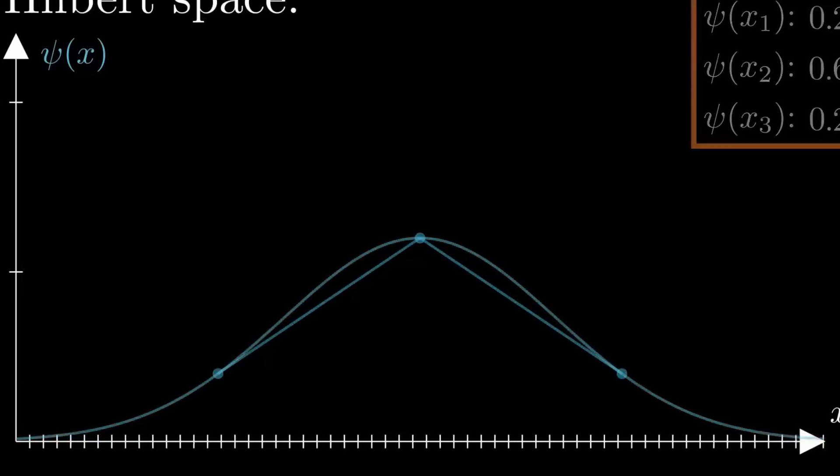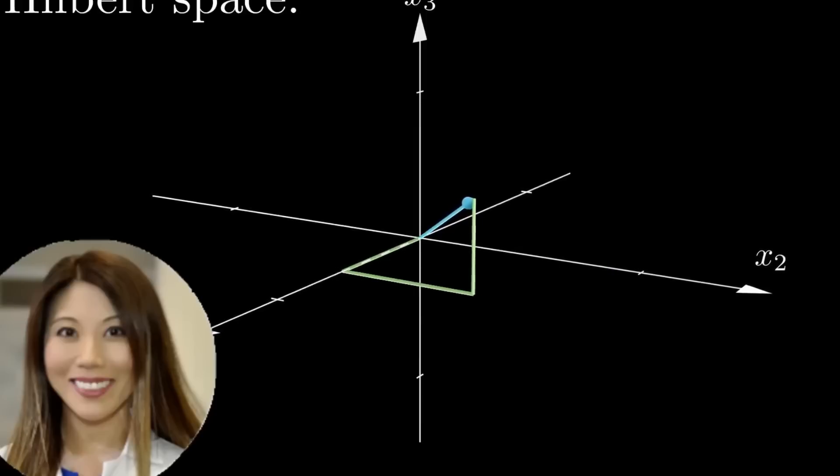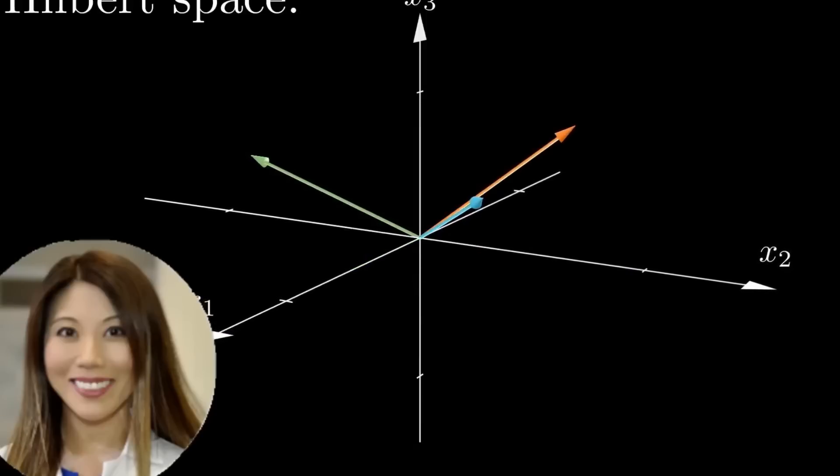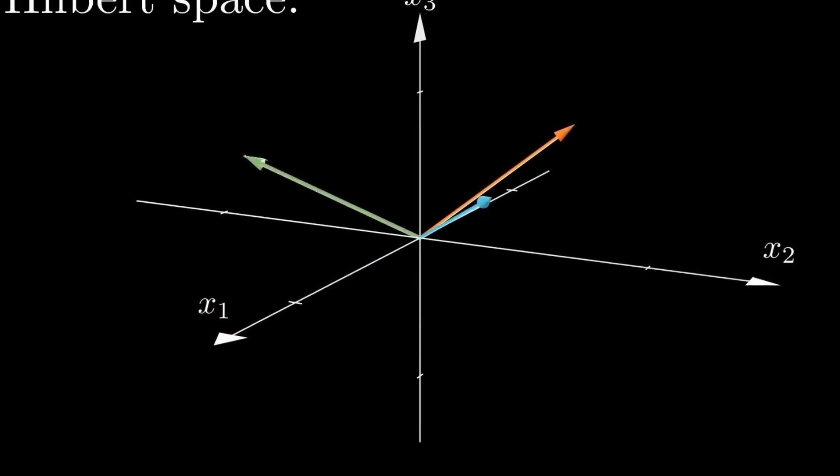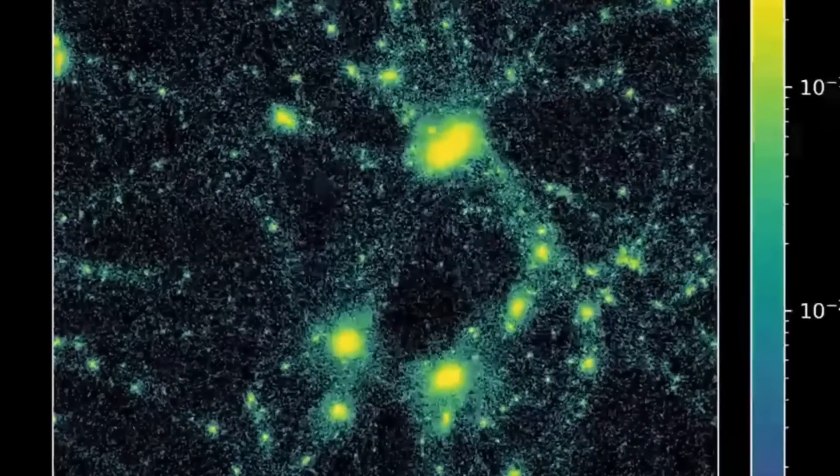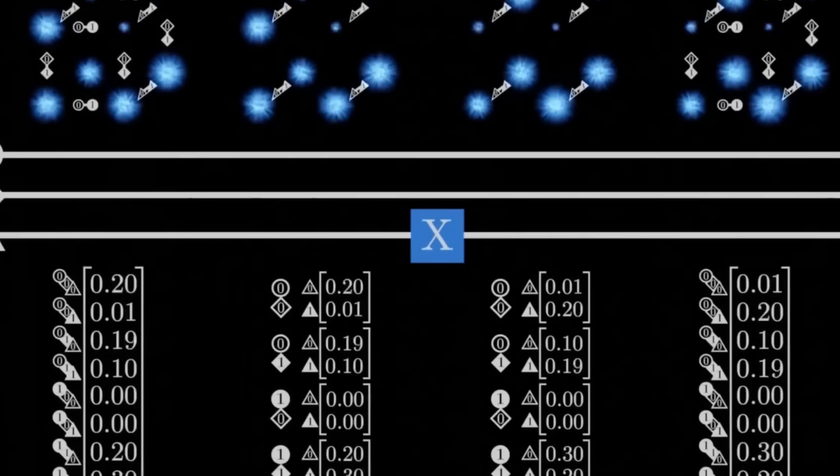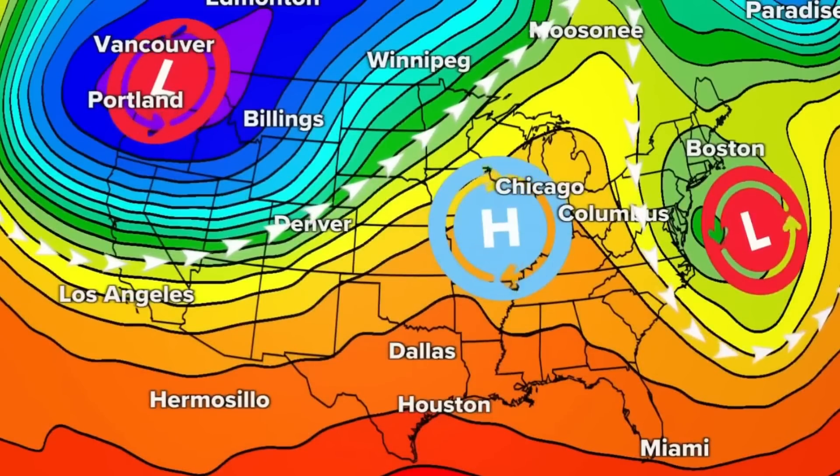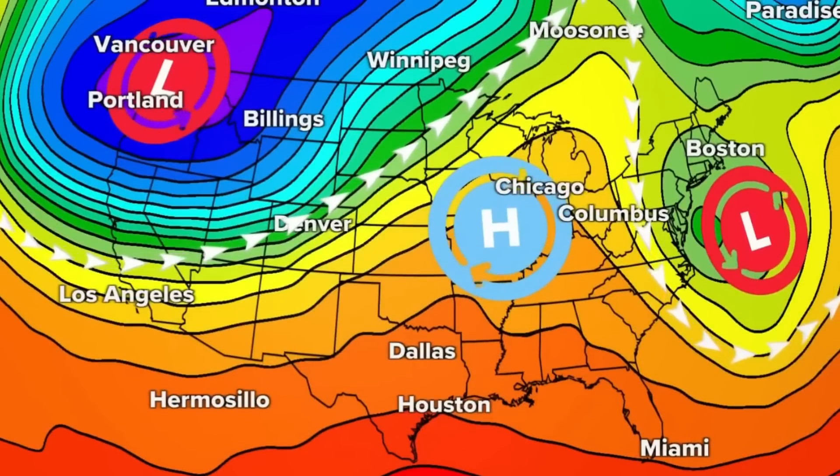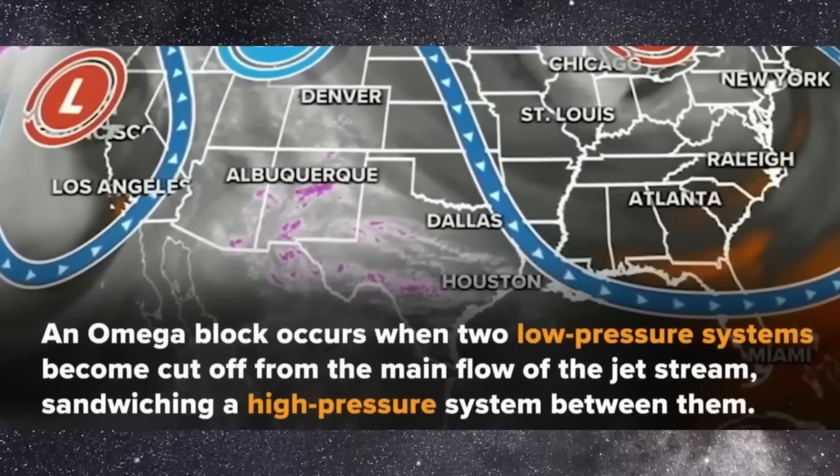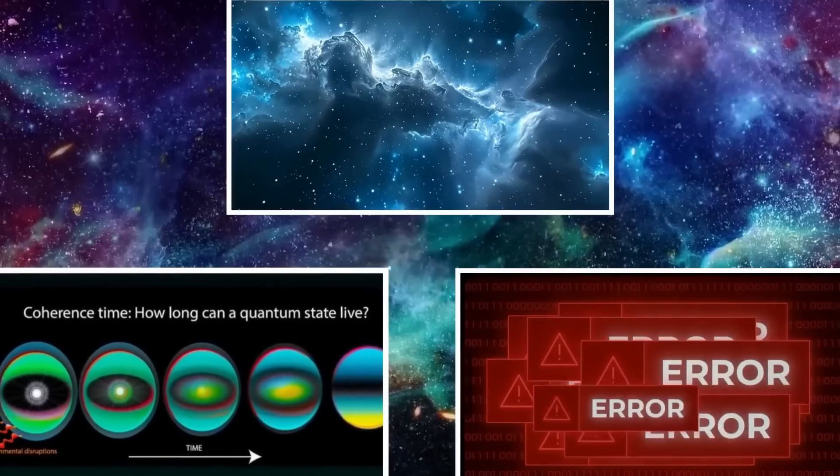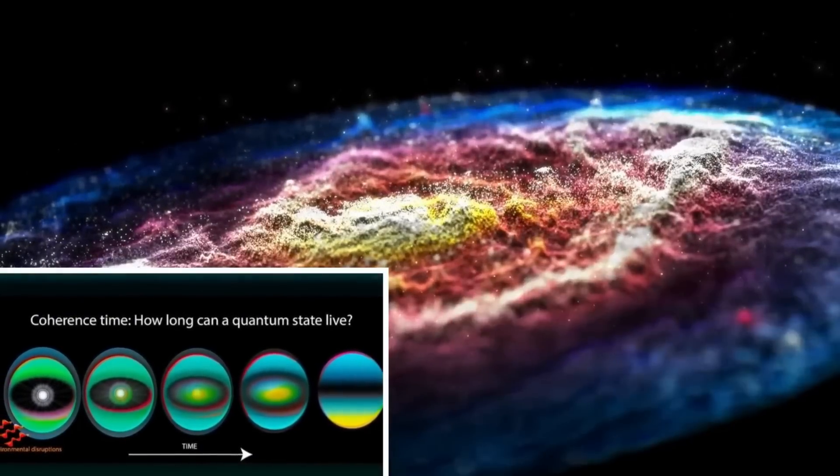There are moments in human history when a discovery doesn't just challenge our understanding of the world, it shatters the illusion that we were ever in control. The Omega pattern is not just a mathematical curiosity or a quantum anomaly. It is a revelation. One that whispers a terrifying possibility. That reality is not random, not neutral, and certainly not unaware. It is structured, guarded, observed. Maybe it's not that we weren't ready to find the pattern. Maybe the pattern was never meant to be found at all.